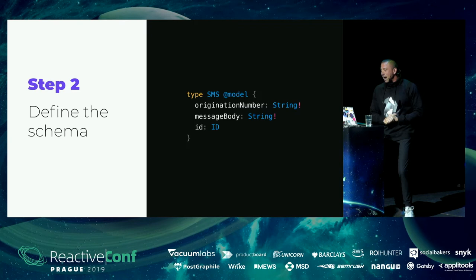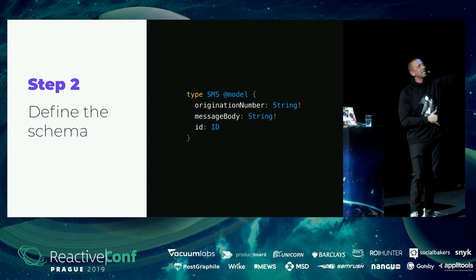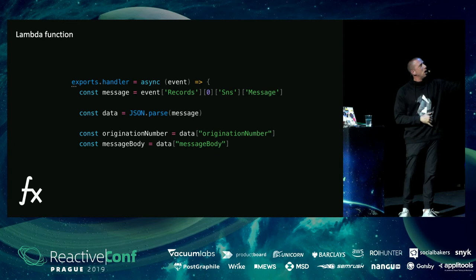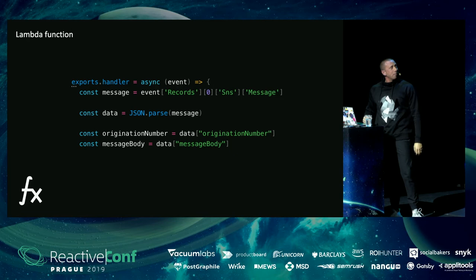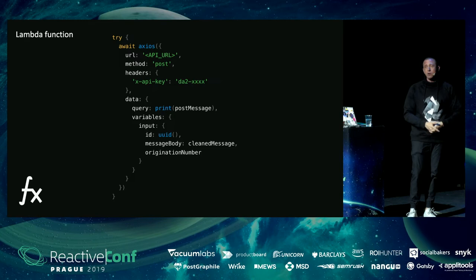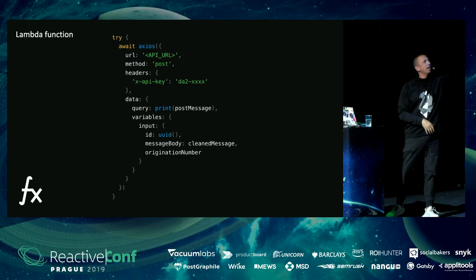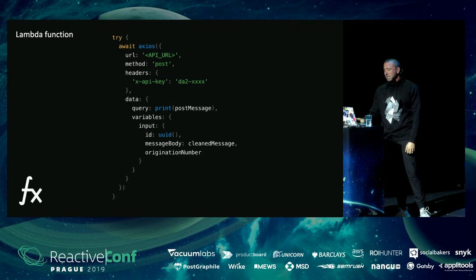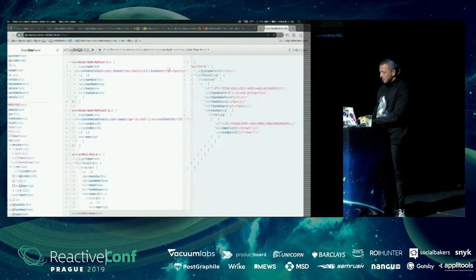The GraphQL schema only needs an origination number, message body, and an ID. The Lambda function parses the incoming message, extracts the origination number and message body, and creates a raw HTTP request using Axios — passing in the URL, the API key, and the variables for the message. Let's go ahead and look at the demo. We can see there's already one message from someone saying 'Hello World' — pretty cool.